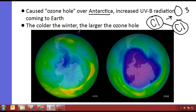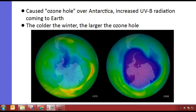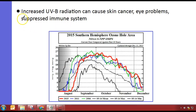Here's a picture of the ozone hole — this dark spot shows the thinner parts. This is from 1979, and here's obviously 2008. Pink indicates very thin or small concentrations. Increased UVB radiation can cause skin cancer, eye problems, and a suppressed immune system — that means a weakened immune system. That's one of the reasons why they're concerned about it.